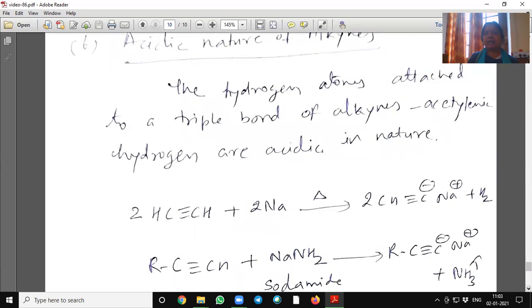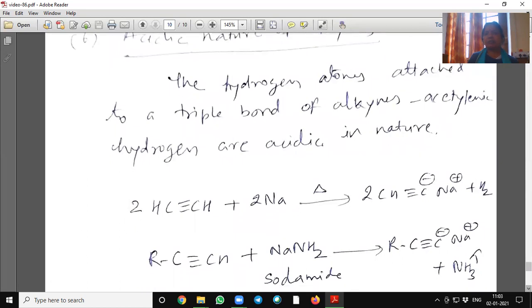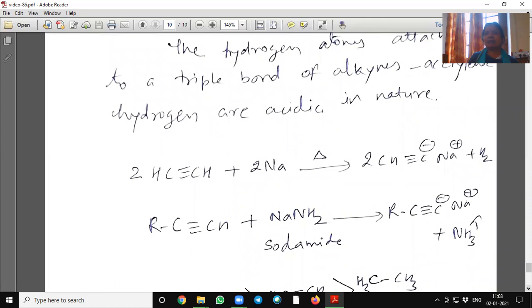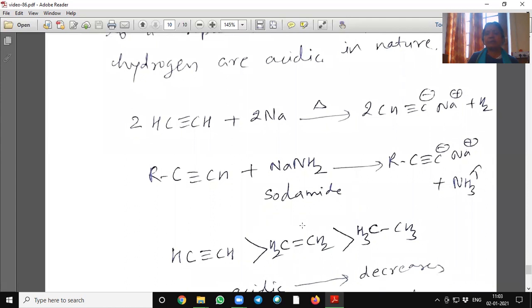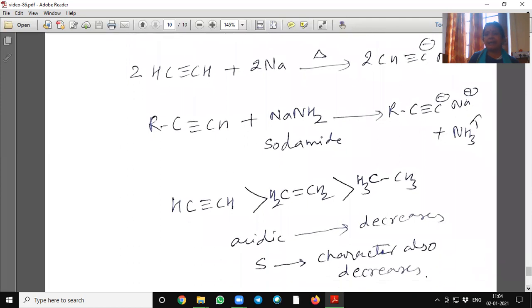Acidic nature of alkynes. The hydrogen atoms attached to a triple bond of alkynes, acetylenic hydrogen, are acidic in nature. See here how this sodium will react on terminal hydrogen and it will form hydrogen gas. So it shows that this carbon-carbon are very packed and there is polarity between the carbon and hydrogen. It shows that it is acidic in nature.